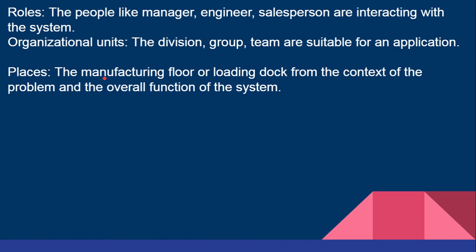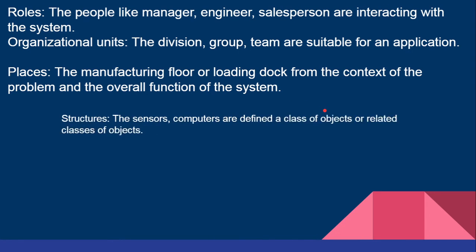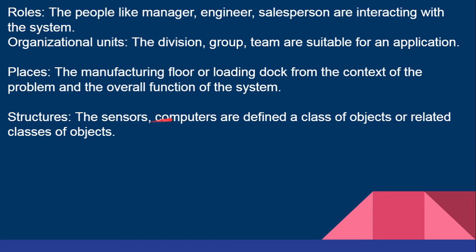Then there are places — such as the manufacturing floor or loading dock — which form the context of the problem and overall function of the system. Finally, structures: sensors and computers are defined as a class of objects or related classes of objects. When we have systems, sensors play an important role — they bring the input and also display the output, forming the structures in the system.